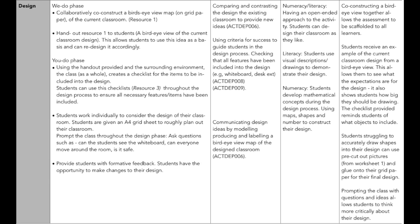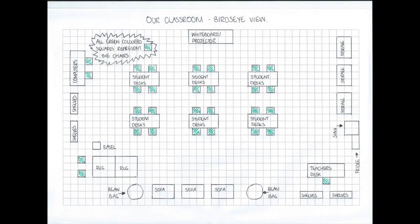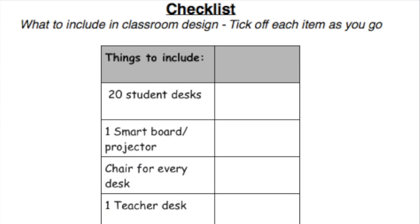In Stage 4, the students begin the 'you do' phase of the gradual release of responsibility and start to develop ideas for their new design of the current classroom. The students apply the knowledge previously developed in this unit to create their design. Using grid paper, the students work individually to plot their ideas. Resource 1, which is a co-constructed bird's eye view map of the current classroom, is given to students as a guide of what is expected of them and allows students to grasp an idea of how big objects should be drawn.